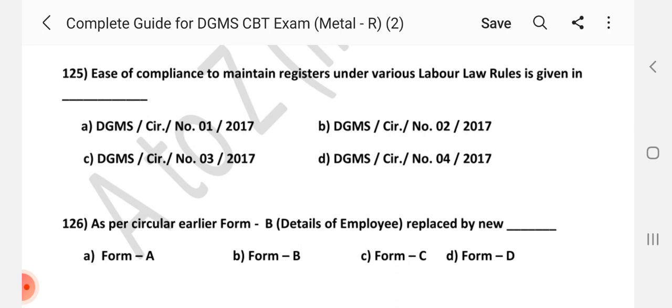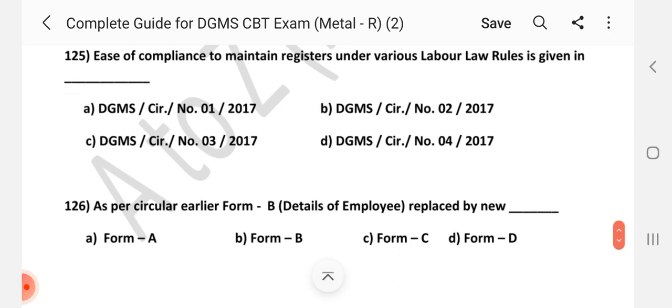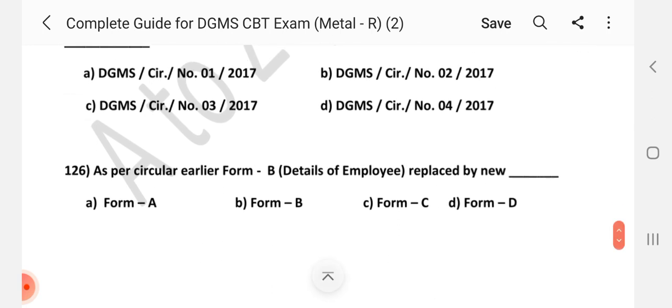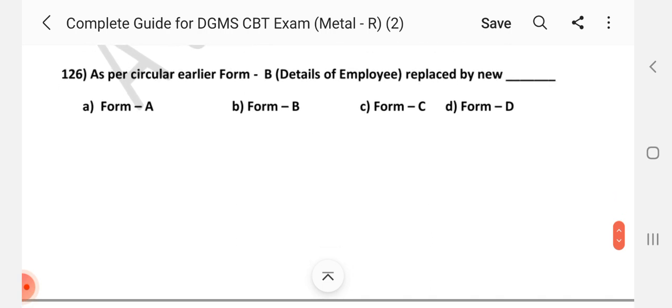Question number 125. Ease of compliance to maintain register under various labor law rules is given in dash. Answer is A, DGMS circular number 1 of 2017. Question number 126. As per circular earlier form B, details of employee replaced by new dash. Answer is A, form A.